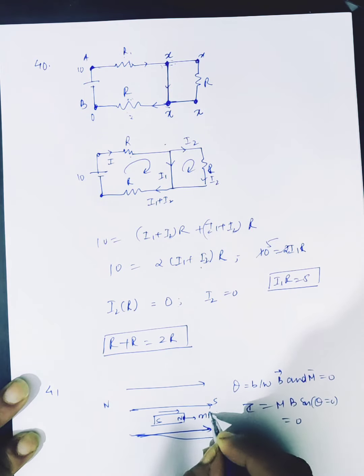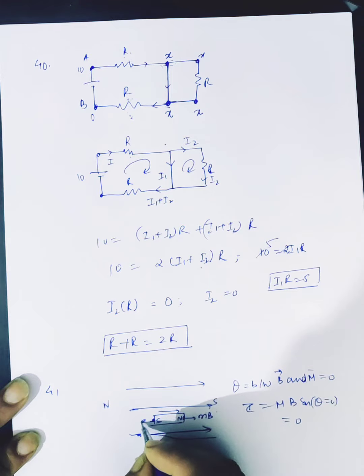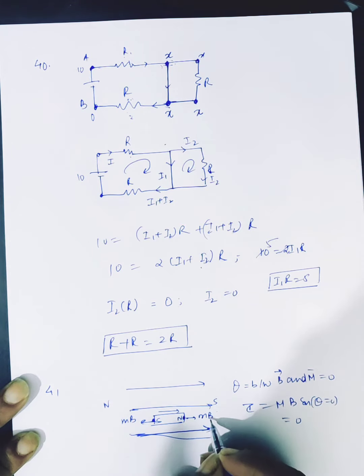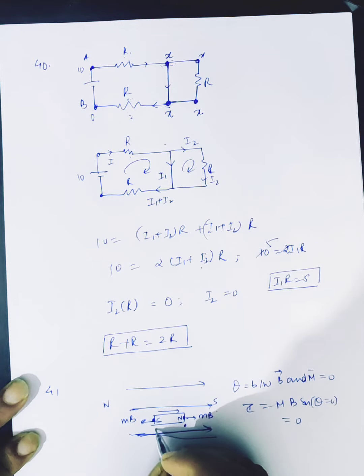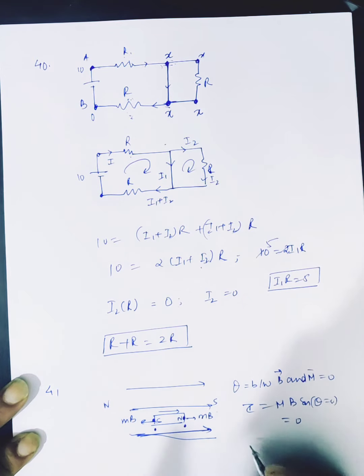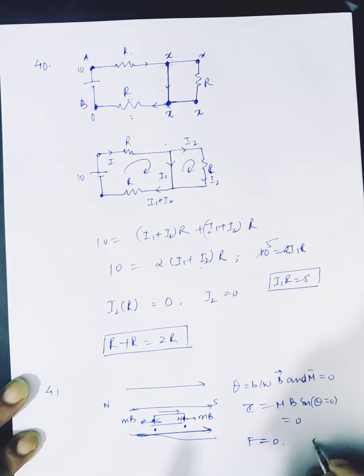The force is M times B, but pole strength is the same and uniform magnetic field, so this region and this region, the value of B is the same. The force of B is 0, so this answer is option C.